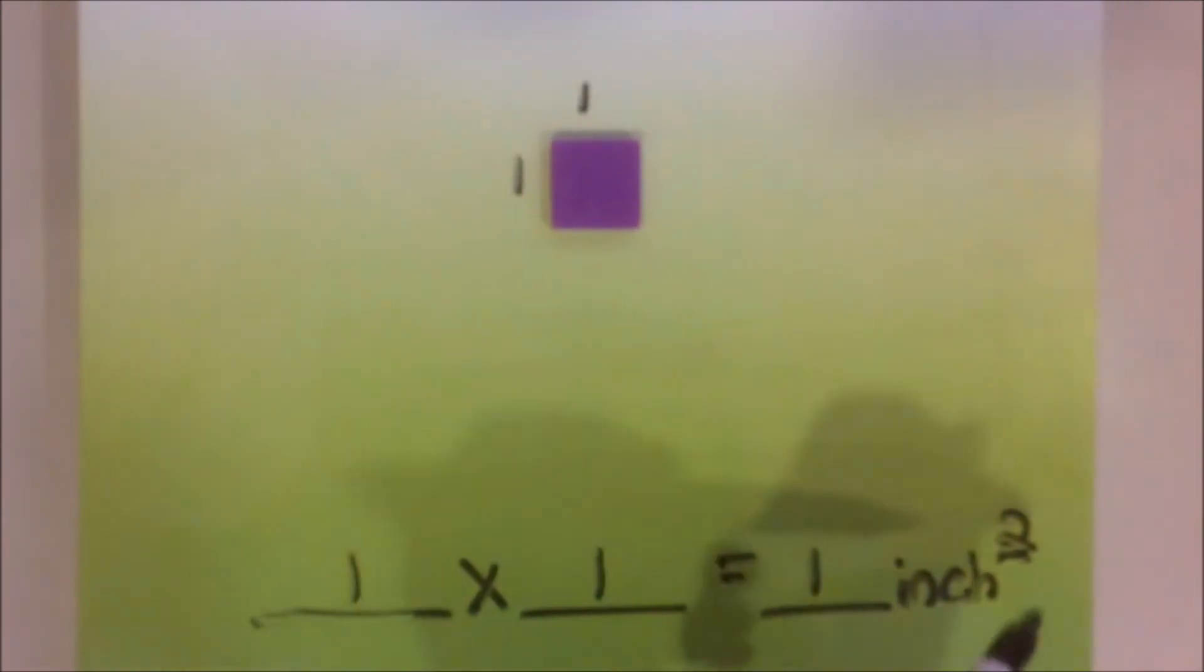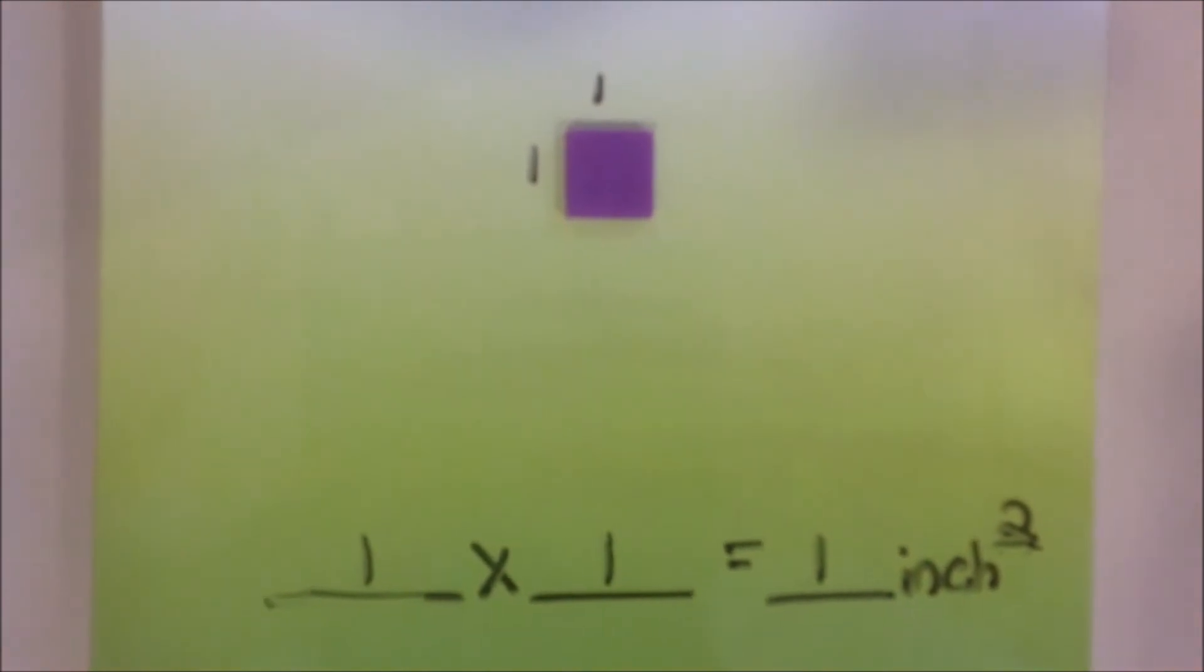We are going to multiply 1 times 1 to get an area of 1 inch squared. Instead of just writing out the word squared, we are going to be using the exponent 2, which explains the same idea.